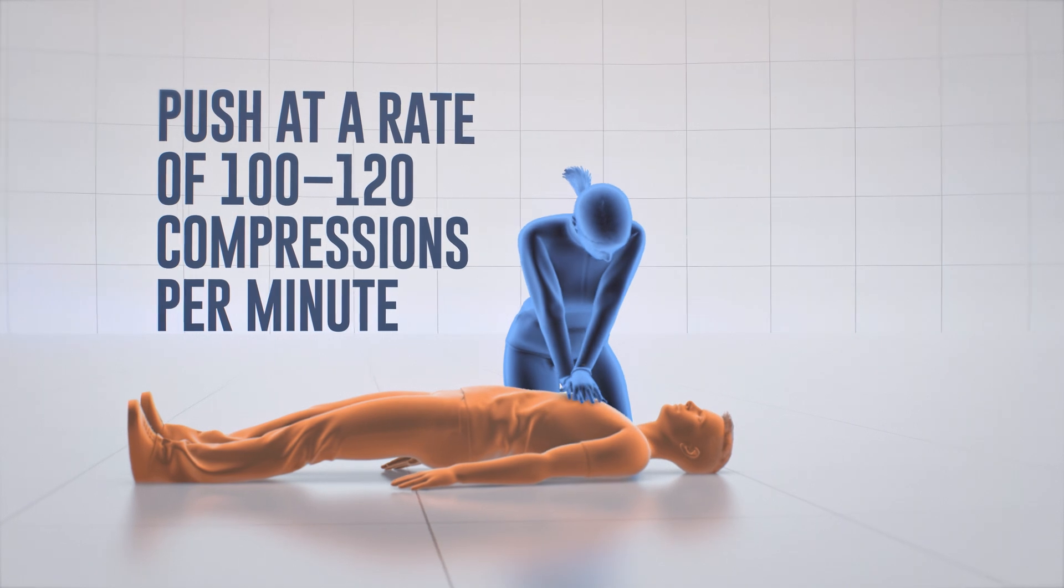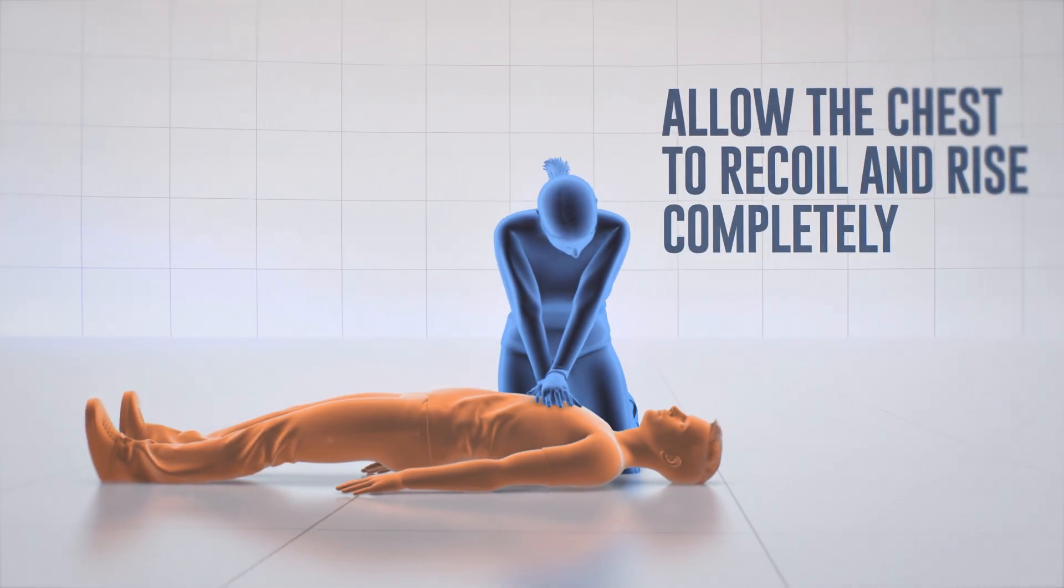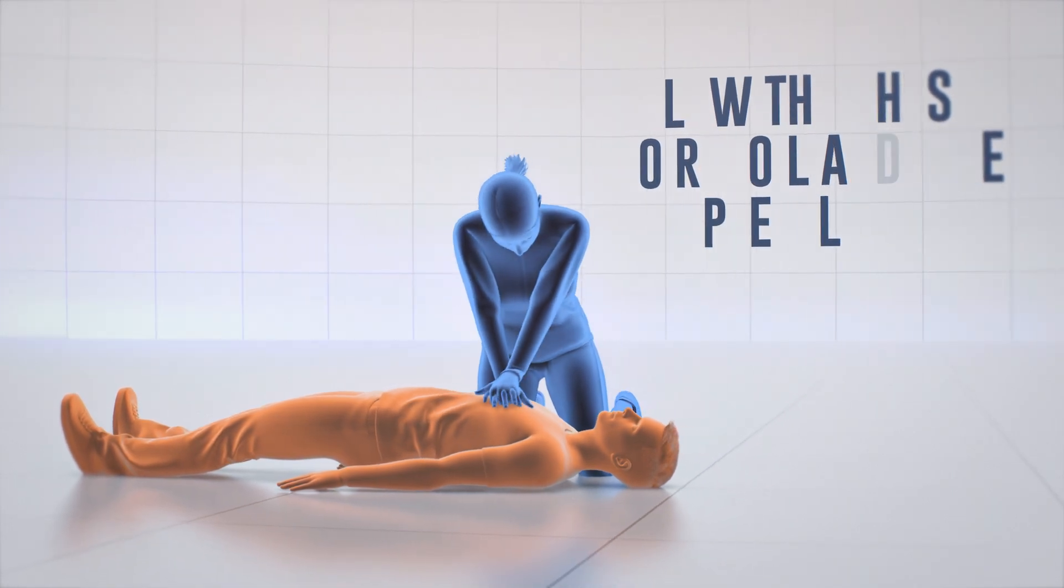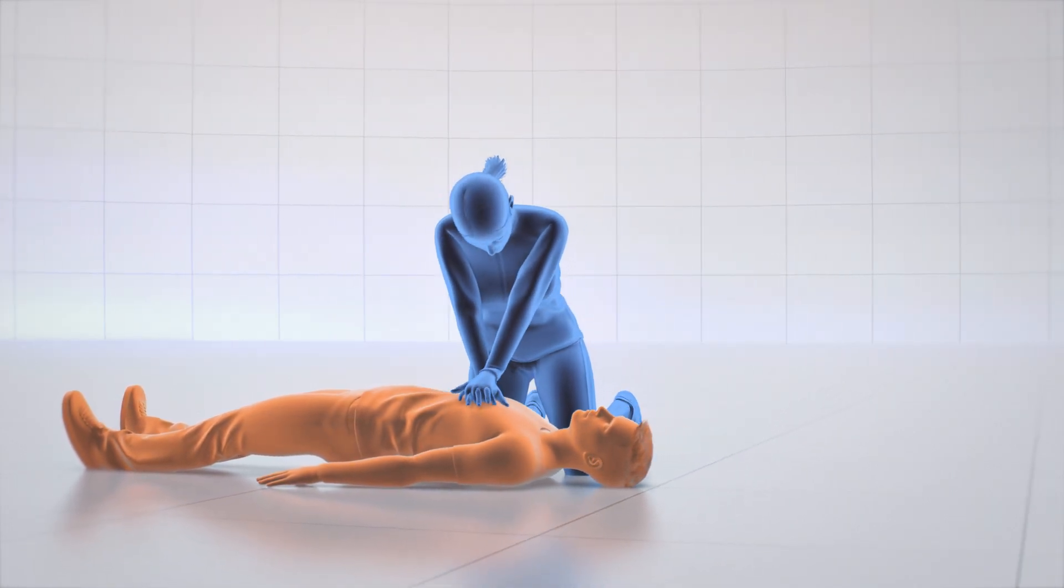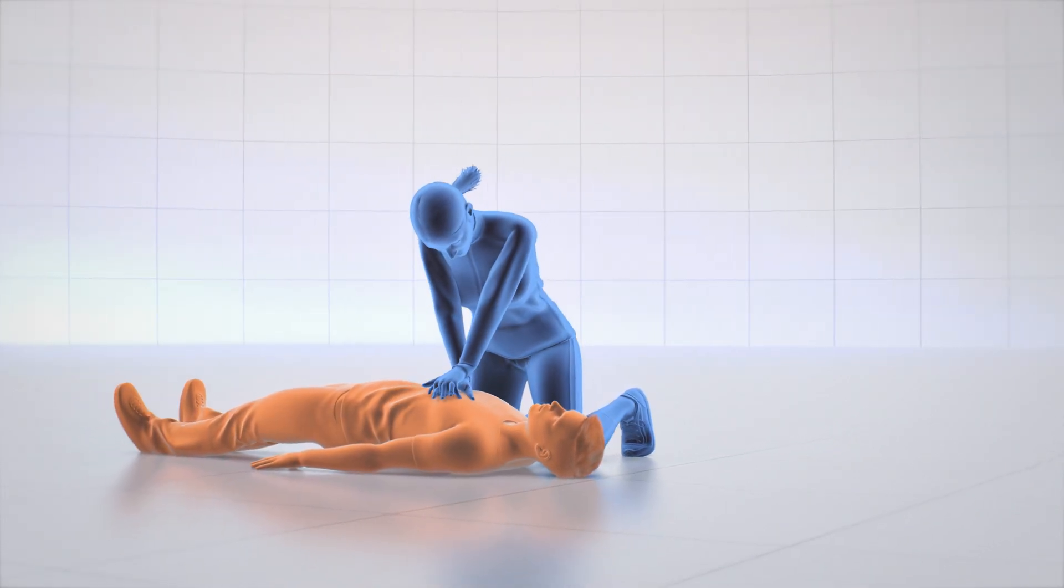Push hard at a rate of at least 100 to 120 compressions per minute and make sure to allow the chest to recoil and rise completely in between each compression. For reference, the songs Stayin' Alive by Bee Gees or Baby Shark Dance by Pinkfong are around 100 beats per minute.